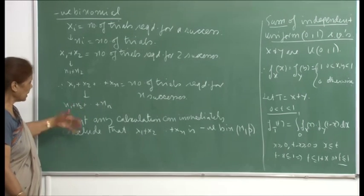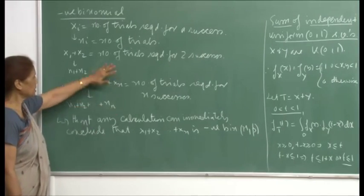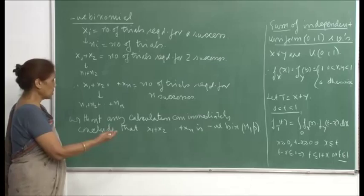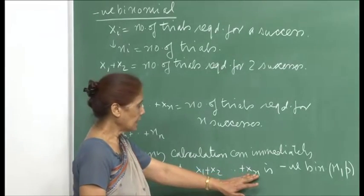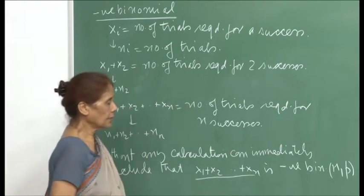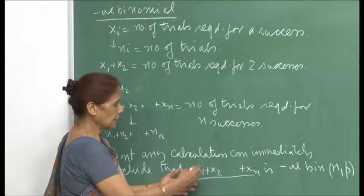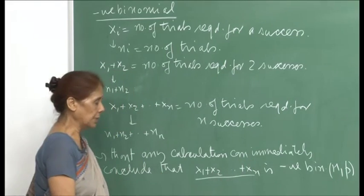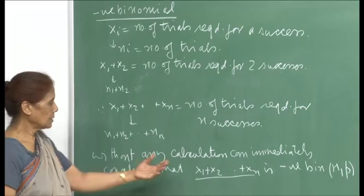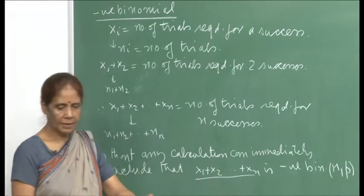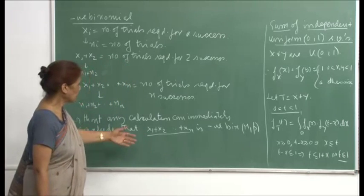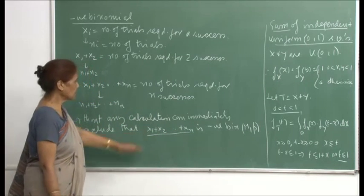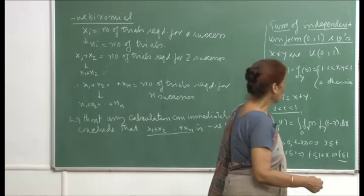Without any calculation, you can also conclude this directly by description: since each X_i is the number of trials for one success (geometric), adding n such independent geometric random variables gives the number of trials required for n successes, which by definition is negative binomial(n, p). So you do not necessarily need to use convolution here — the result follows from the interpretation.